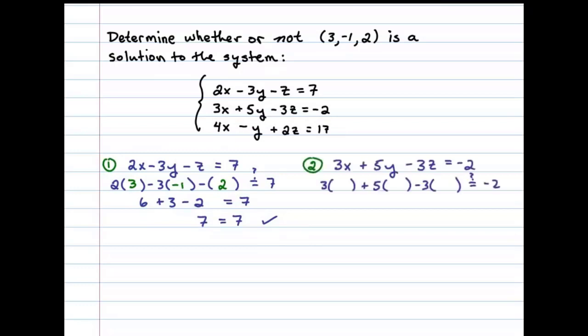Again we'll substitute 3 in for x, -1 in for y, and 2 in for z. In this case we get 9 - 5 - 6, and we need to see if that equals -2. Sure enough it does, and the ordered triple satisfies the second equation.